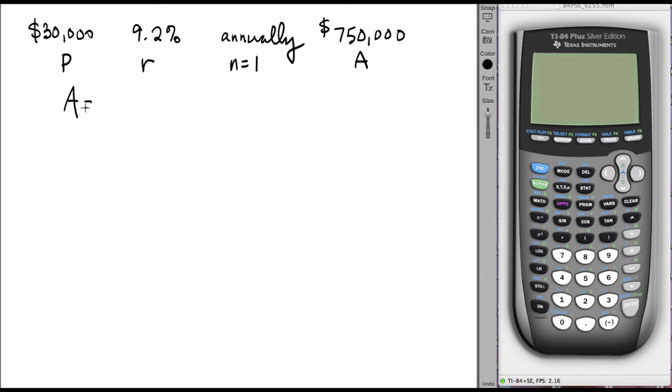The overall formula A equals P times parentheses one plus R over n raised to the n times t becomes: seven hundred and fifty thousand equals thirty thousand times parentheses one plus point zero nine two divided by one, raised to the one times the unknown number of years.